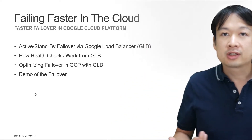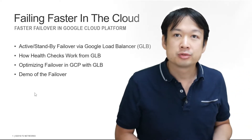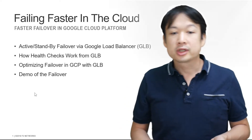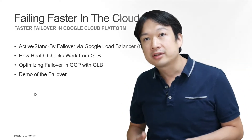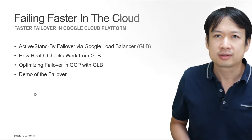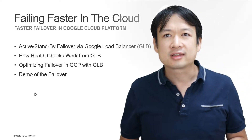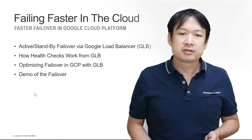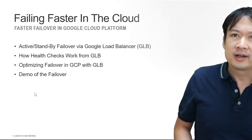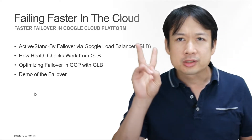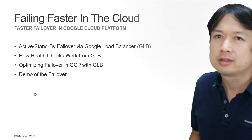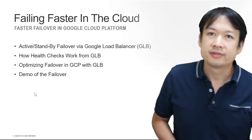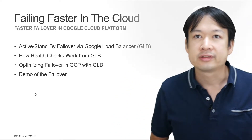First, we're going to cover how Active Standby works in Google Cloud using the Google Cloud Load Balancer. Then we're going to walk through how the health checks work, and this is going to explain why things kind of take longer in a public cloud environment. After that, we'll talk about how to optimize the failover — what are those two things we did to make failover happen a little bit better — and then we'll do a demo of it so you can see this in action.